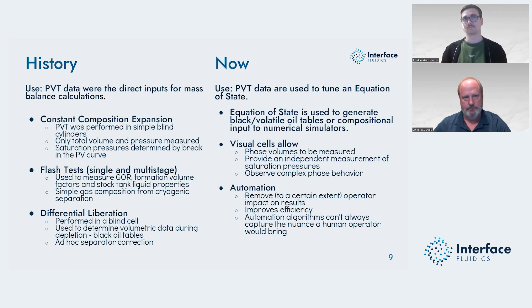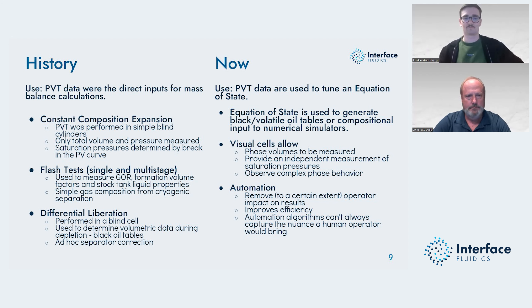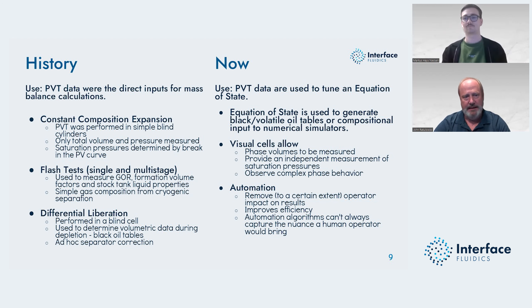There's a lot of baggage that comes from the history of how we used to do things. It's been improvement in a linear direction towards better versions of previous tests. The older data — if you go back to the 1930s to the 1960s — there's going to be substantial uncertainty in those reports because they simply did not have the equipment and methods we have today. So if you go to match those, you may have to let a lot of the data slide, particularly DIFFLIB GORs. Full report DIFFLIB GORs are just bad, usually.